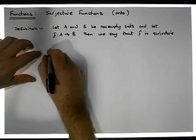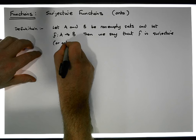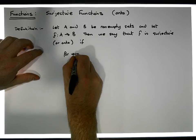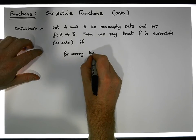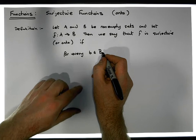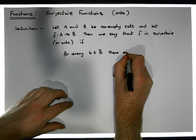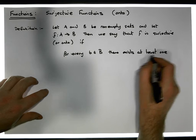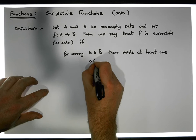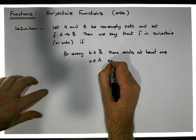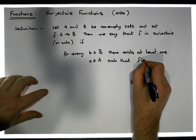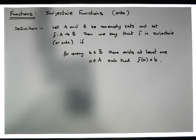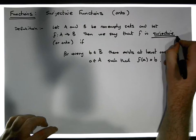F is surjective — or onto — if for every element b in the set B, there exists at least one element a in the set A such that f(a) = b. That's an important definition — it's the definition of surjective functions.